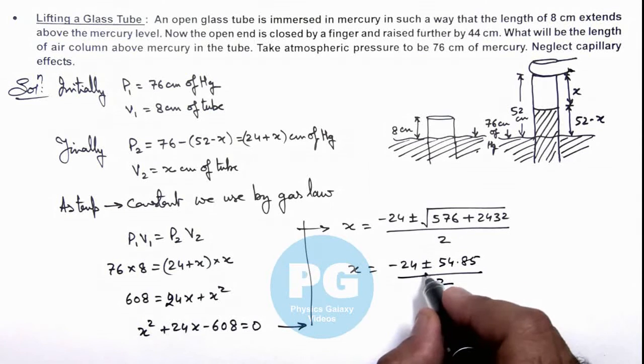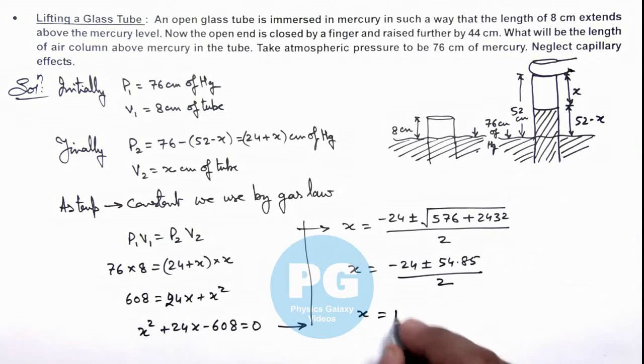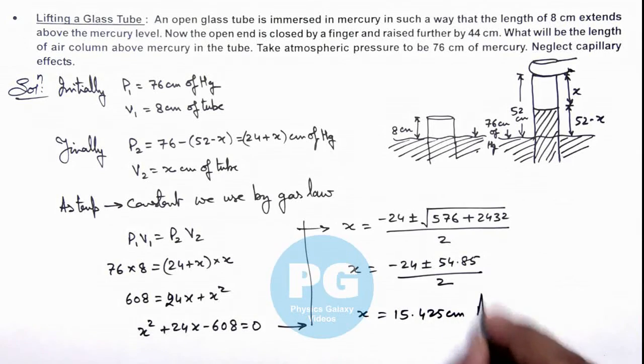We can discard the negative sign as x cannot be negative, it cannot overflow as it is closed. So the value of x is 15.425 centimeters, that is the result of this problem.